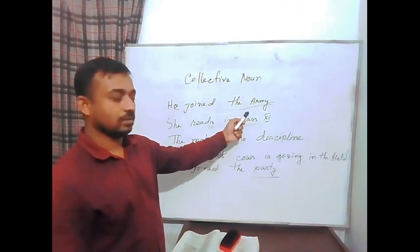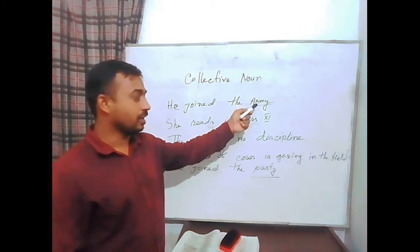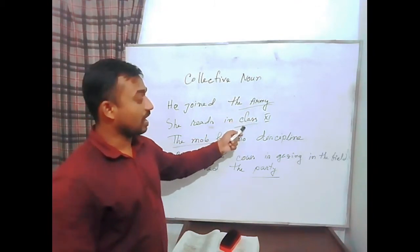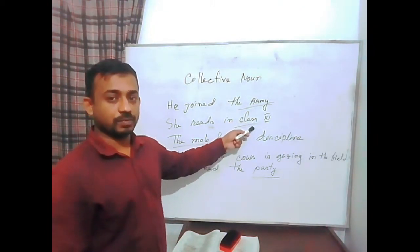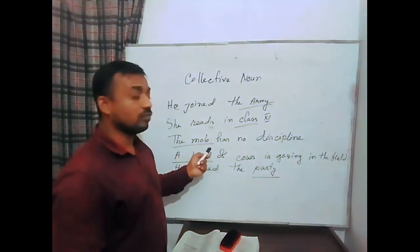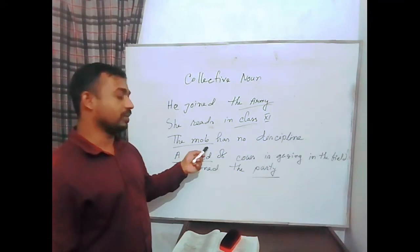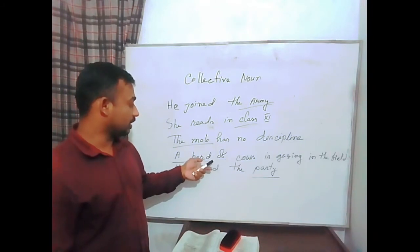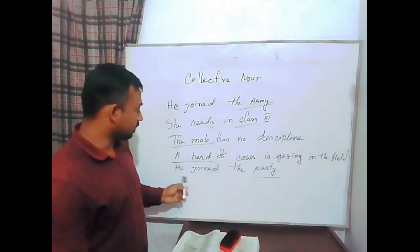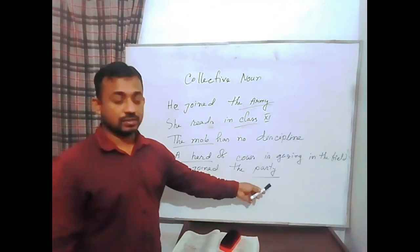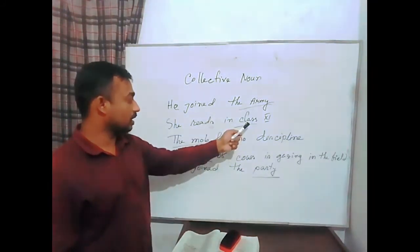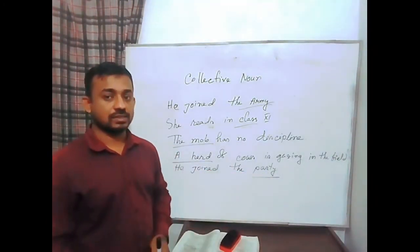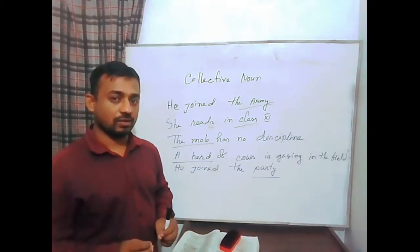Army is one class of people. Class is another group of people. Mob represents a movement or crowd — mass people may be included. A herd refers to animals — a group of animals. And party — 'he joined the party.' So these words — army, class, mob, a herd, and party — this type of noun is called collective noun, and they can be used as subject, object, or complement.